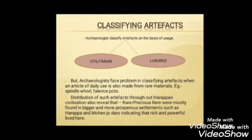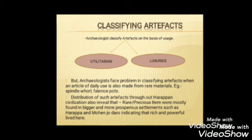Luxurious or rare artifacts were found in larger settlements such as Mohenjo-daro or Harappa, where there was greater demand, whereas certain small settlements might have been centers of craft production.